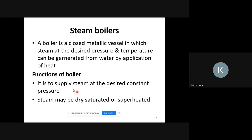Functions of a boiler: it is to supply steam at a desired constant pressure. The steam may be dry saturated or superheated. Dry saturated steam has no water particle in it. If you add further heat to dry saturated steam it becomes superheated steam, which helps to increase the efficiency of the boiler.